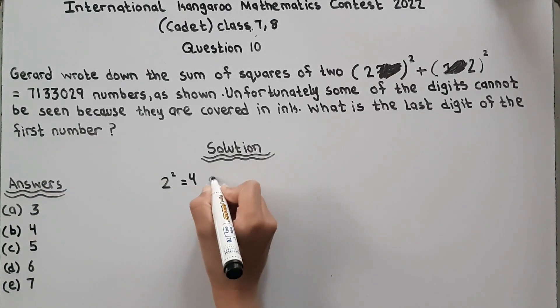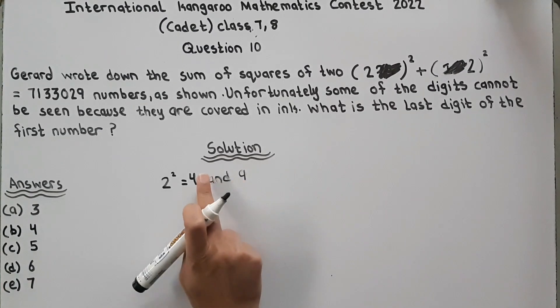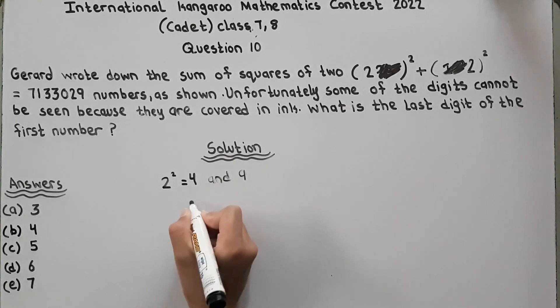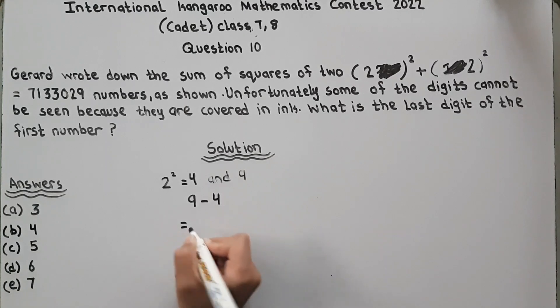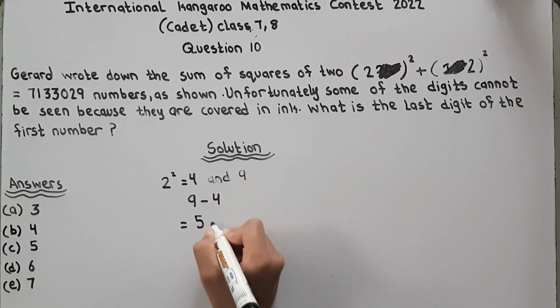Now we have 4 and 9. So 9 minus 4 is equal to 8, 7, 6, 5. 5 and this is our answer.